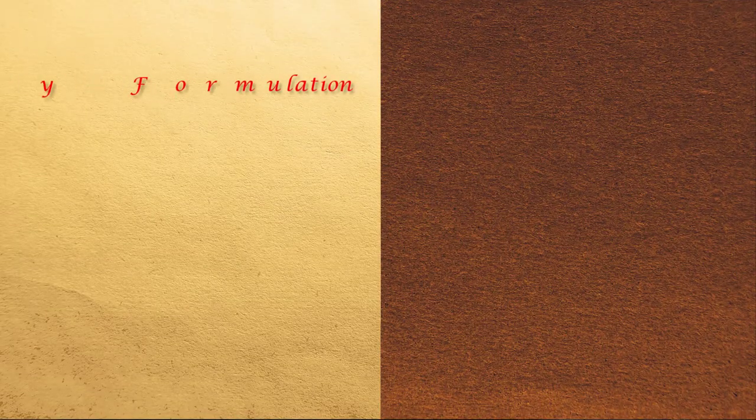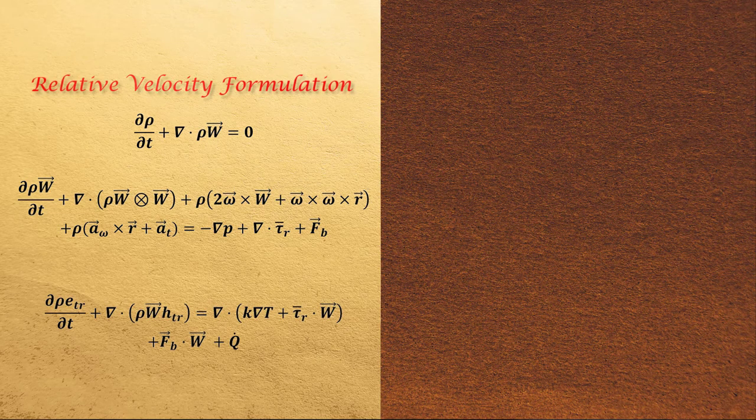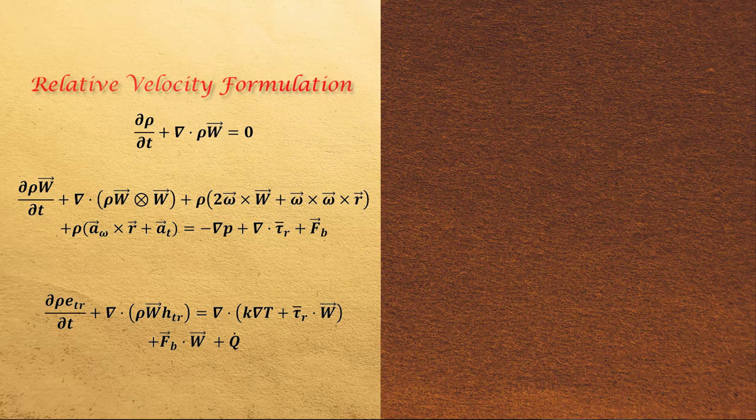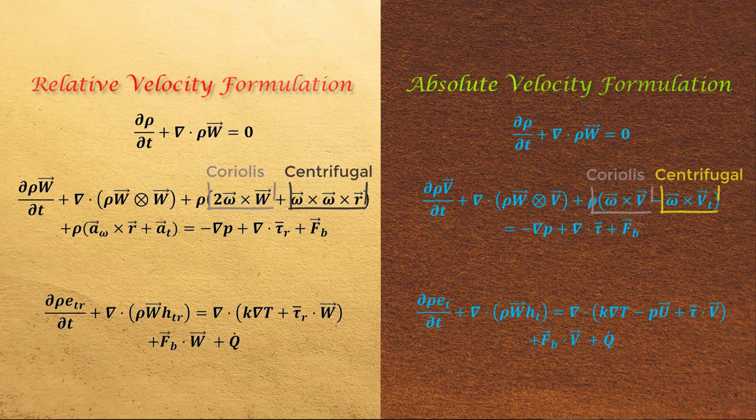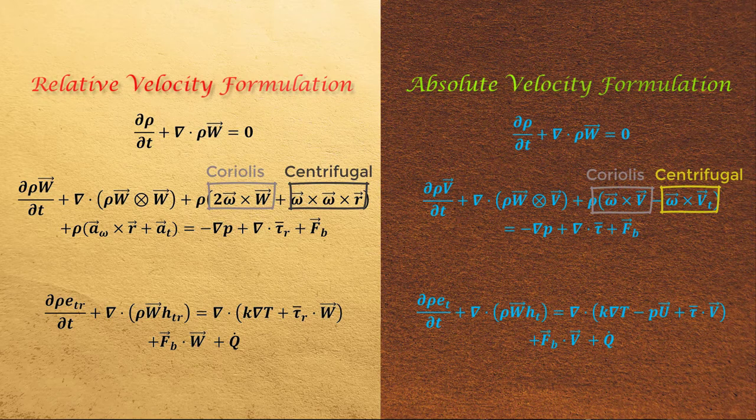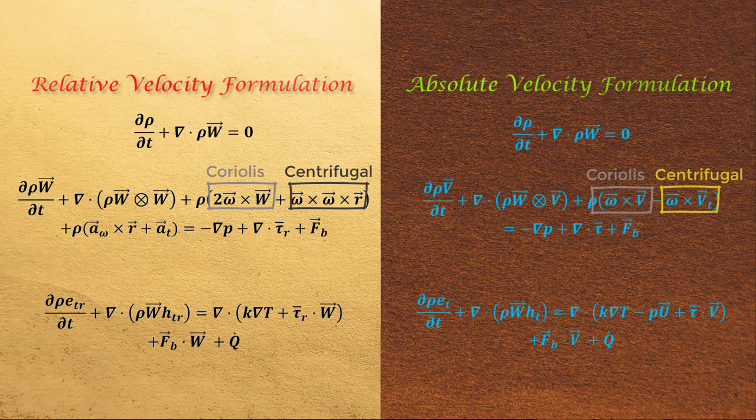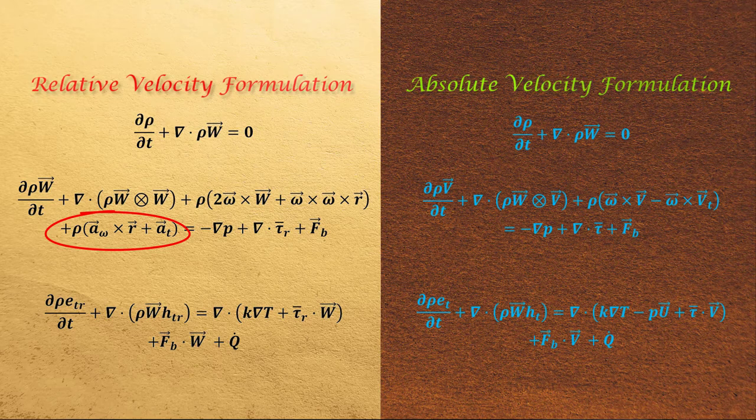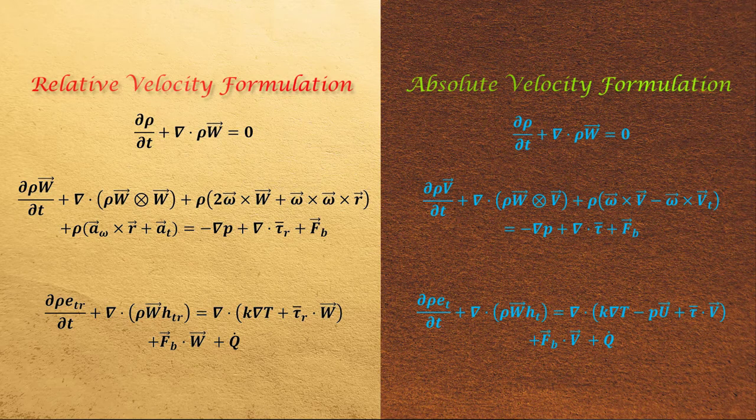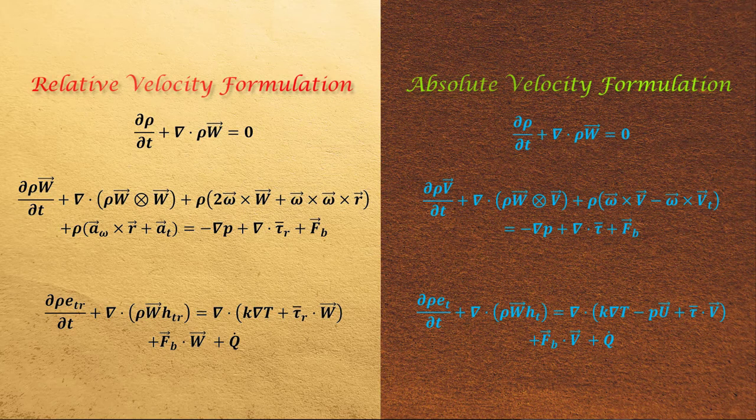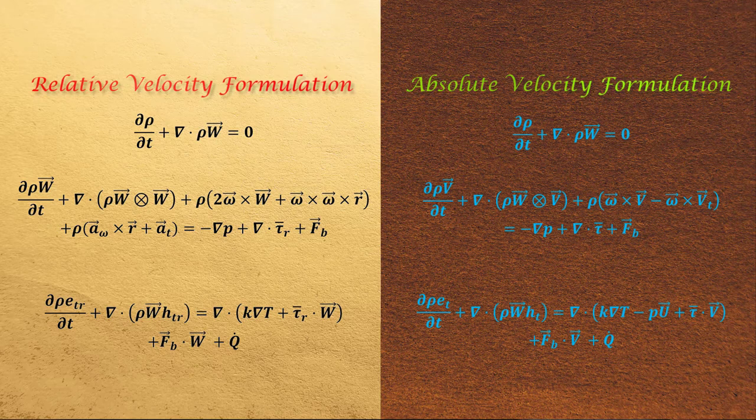The Navier-Stokes equations based on stationary frame of reference are transformed to a moving or rotating reference frame to obtain the relative velocity formulation. The equations for the absolute velocity formulation are obtained from the relative velocity formulation. The momentum equation in both formulations have additional Coriolis and centrifugal acceleration terms as well. Moreover, the force balance in the relative velocity formulation contains additional terms, the frame acceleration term. The equation for the relative velocity formulation has both rotational as well as translational accelerations. Even though these equations look different and contain different terms, they are equivalent and can obtain identical solutions when equivalent boundary conditions are applied to solve the flow problem.